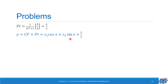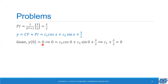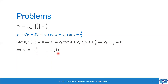This is the required extremal, but conditions are given to find the values of c1, c2, and the Lagrange multiplier lambda. Using the first condition y(0) equal to 0: putting x equal to 0 gives c1 cos 0 plus c2 sin 0 plus lambda/2 equal to 0. Since cos 0 is 1 and sin 0 is 0, we get c1 plus lambda/2 equal to 0, so c1 equal to minus lambda/2 — call this expression 1.